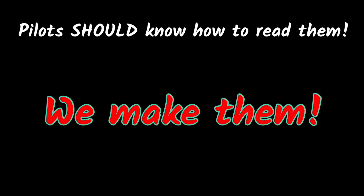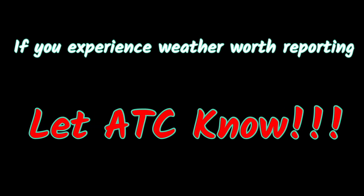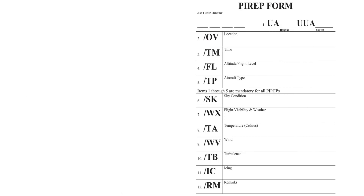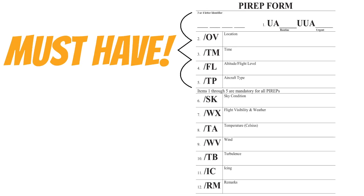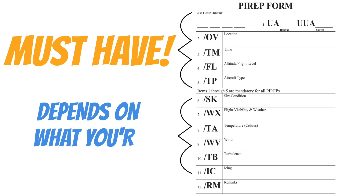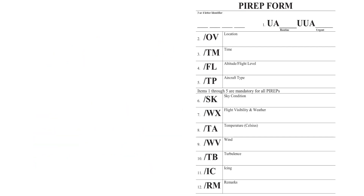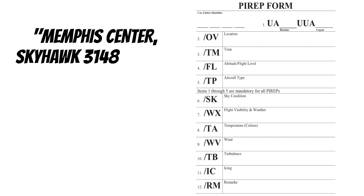If no one makes pilot reports, they don't exist for other pilots to use — so if you experience something worth reporting, let ATC know. At the back of the chart supplement you'll find both a sheet for deciphering PIREPs and a PIREP form that guides you through the information ATC needs. The first five lines of data are required, and the rest depends on the weather you're experiencing. For example: 'Memphis Center, Skyhawk 3148 X-ray, PIREP.'